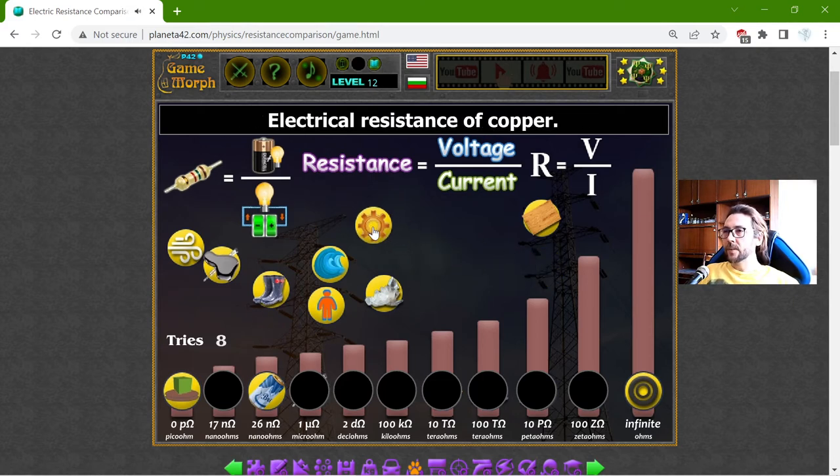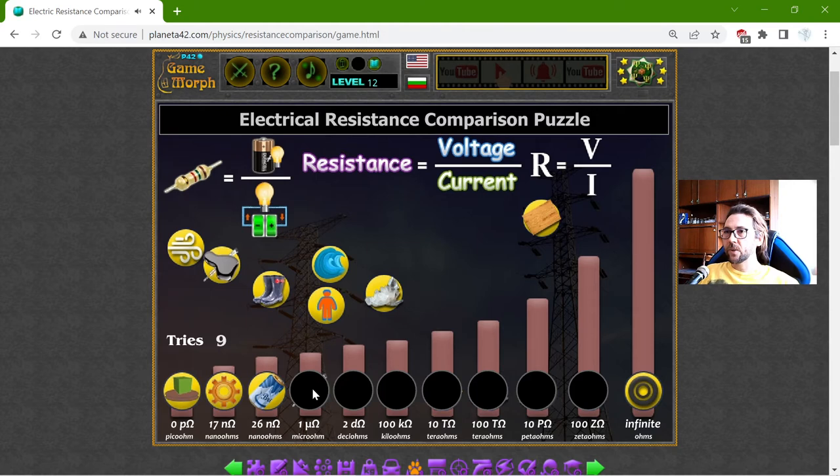And the other good conductor is the electrical resistance of the copper. Copper. That should be 17 nano ohms. Okay, the next one.